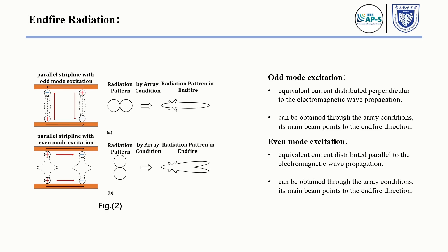When using even mode excitation equivalent current distributed parallel to the electromagnetic wave propagation, the far-field pattern can be obtained through the array conditions. Its main beam splits into two lobes.